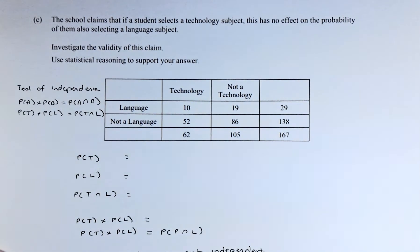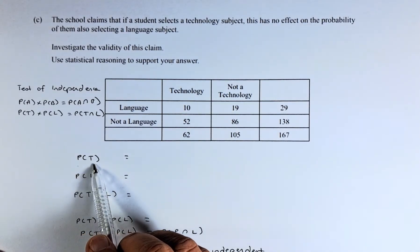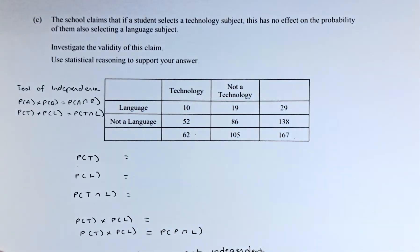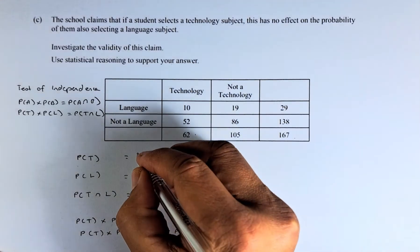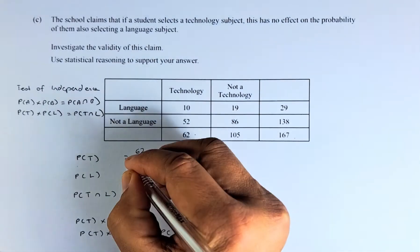Without further ado, let's solve this because this is an excellent question. We are going to take our time to solve this. What is the probability of a technology subject? Technology is here. The total is 62 out of 167. Probability of technology is going to be 62 over 167.